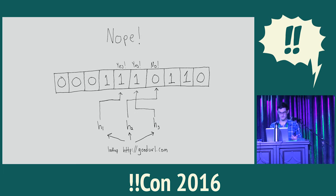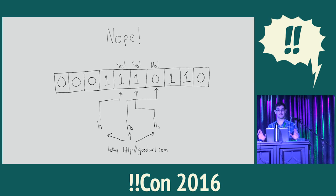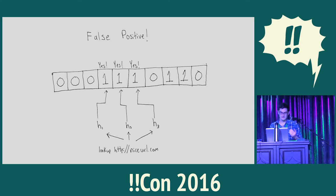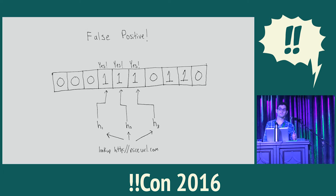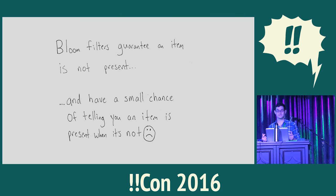Now let's look up a key in this bit set. Let's say we're going to goodurl.com. We hash it against the three hash functions and find ourselves at three places in the bit set. If goodurl.com had been inserted into the malicious URL list, all three locations would be ones. But in fact, one of them is a zero, so we have 100% certainty that goodurl.com is not in the malicious list. But it doesn't always work out so well. Let's say we're going to niceurl.com, which is just a nice URL — it's not in the malicious list. Unfortunately, when we hash it three ways, we end up at three locations that overlap with other URLs that are in the malicious set. We see three ones and are led to believe that niceurl.com is a malicious URL. This is called a false positive. Bloom filters guarantee that an item is not present if we see any zeros, but they have a small chance of telling us an item is present when it's actually not.